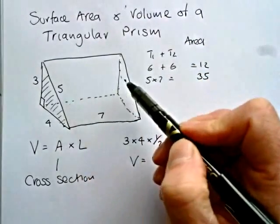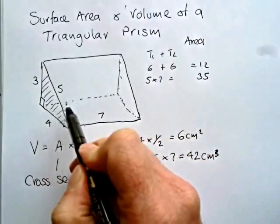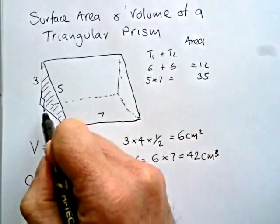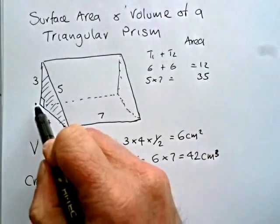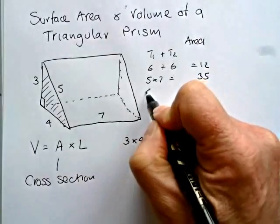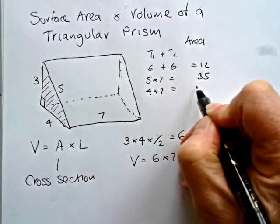So we've got the two triangles and we've got the surface at the front. We've then got the floor surface. And that's 4, it's another rectangle. That's 4 times 7, which is 28.